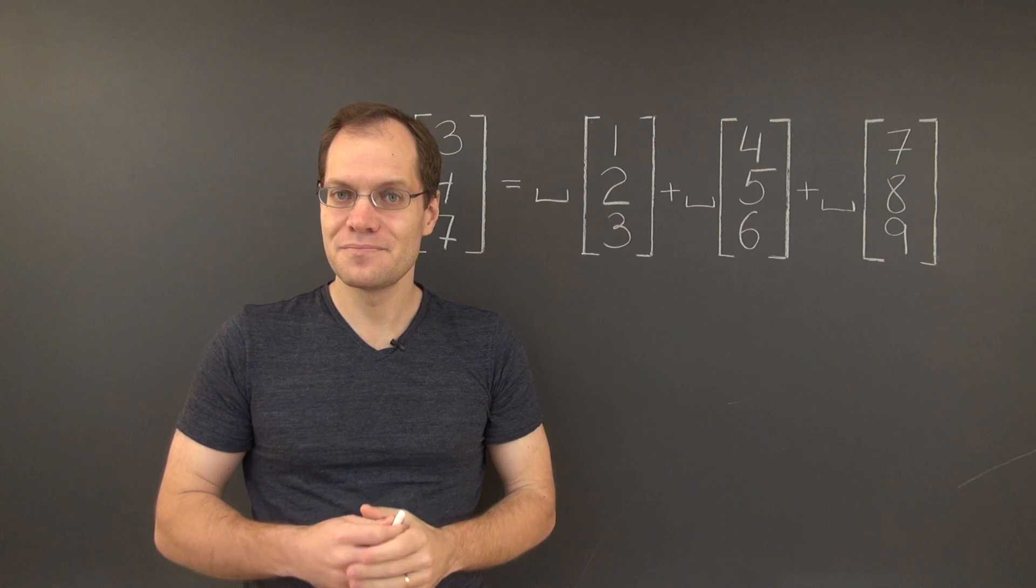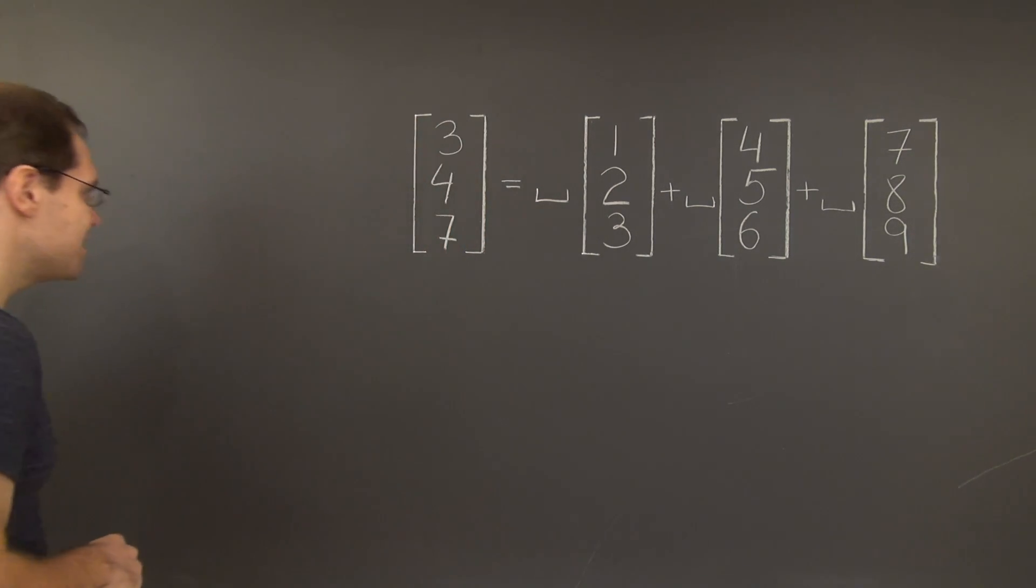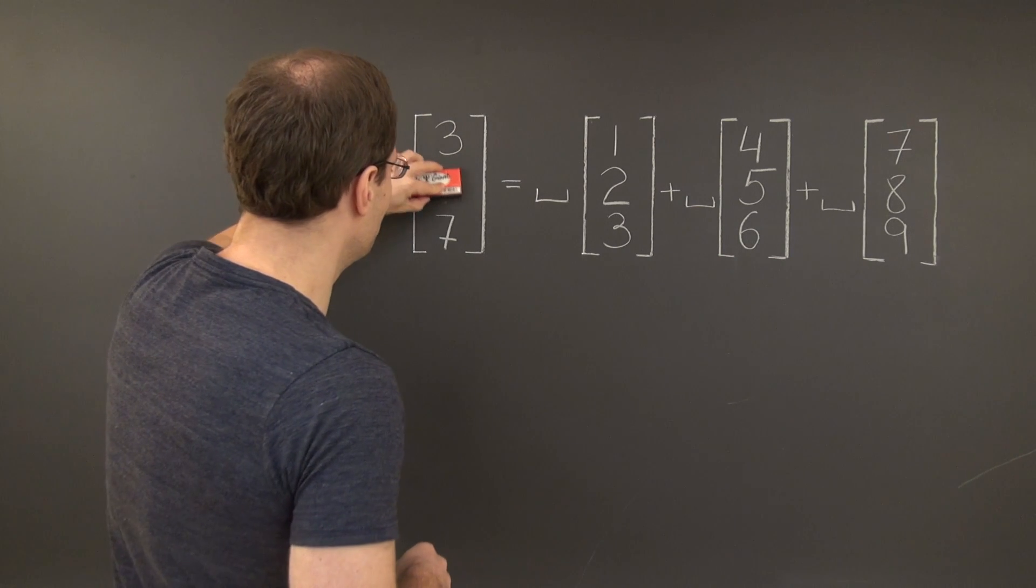But now, just for the sake of the argument, let's make it the average of 3 and 7. Let's replace the 4 with a 5.